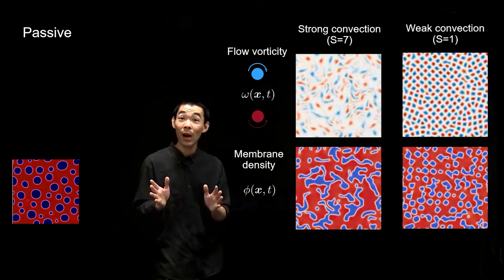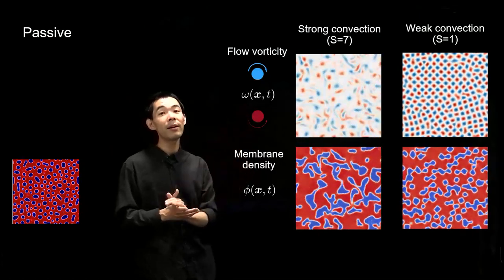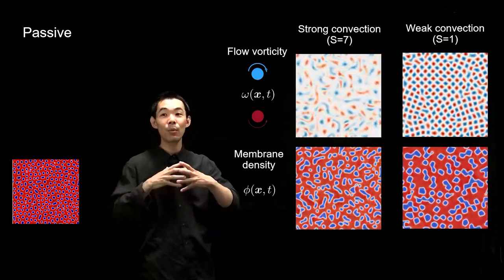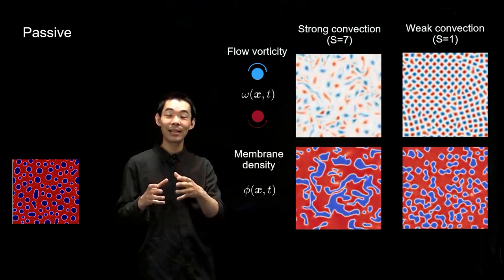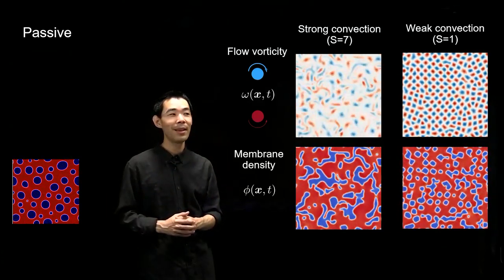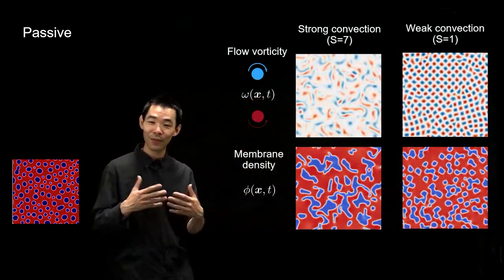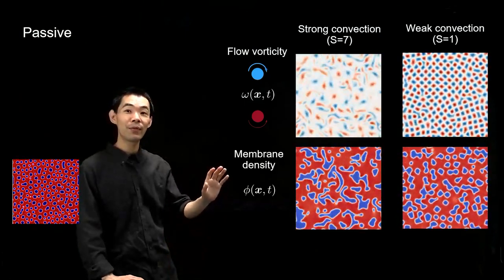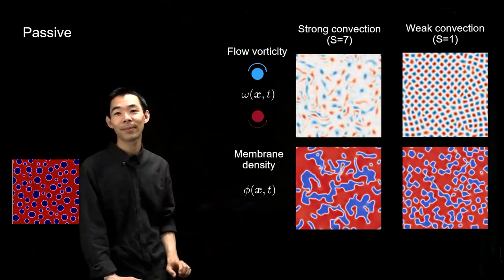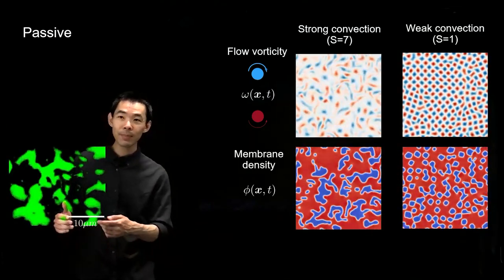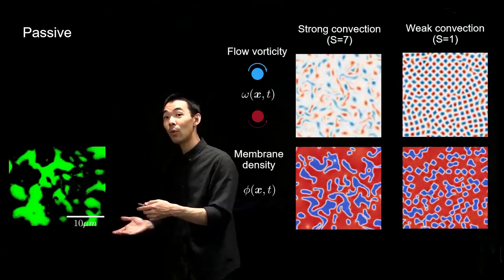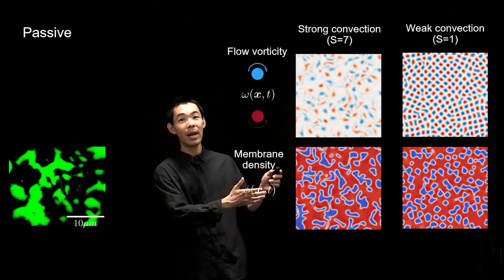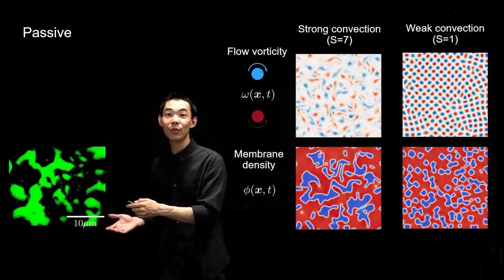For a slightly weaker alignment stress value — a special value where the turbulent nonlinear velocity term in the momentum balance vanishes — you get a lattice of vortices that switch sign and alternate next to each other rather than wave-like propagation. This produces a characteristically different domain morphology. Comparing numerically to experimental velocity fields and membrane order parameter fields, the stronger alignment cases seem to agree more qualitatively with the morphology and structure found experimentally.